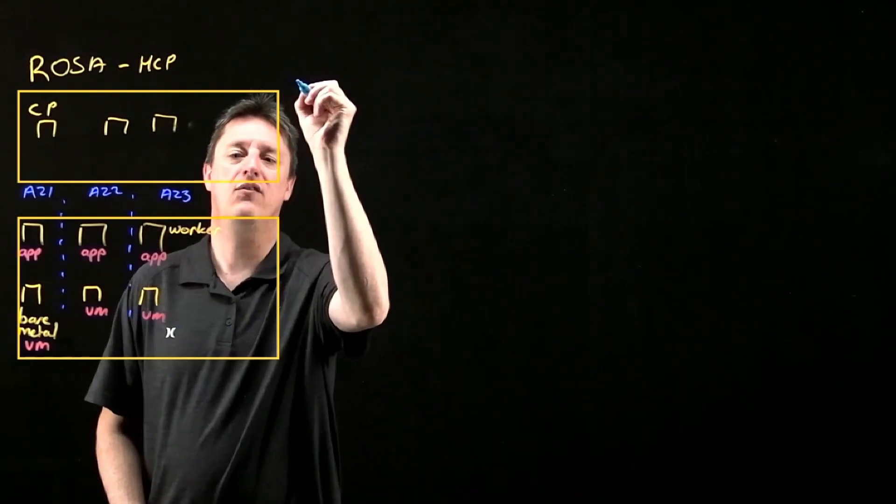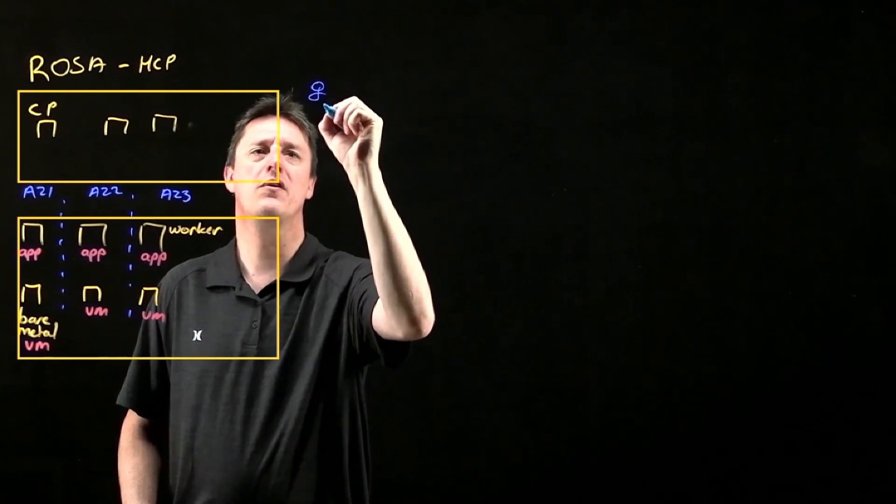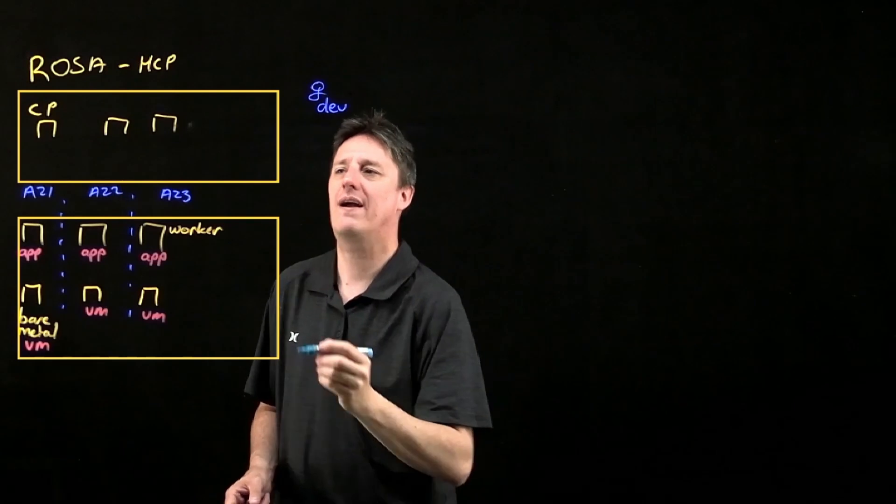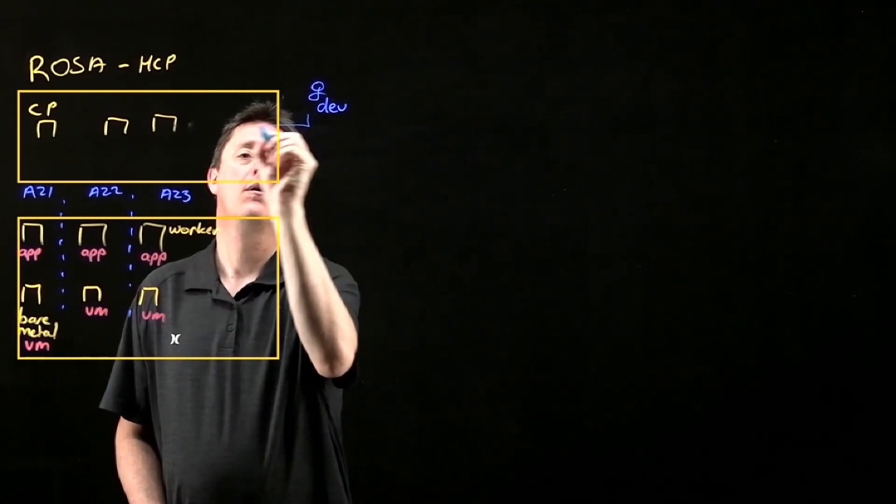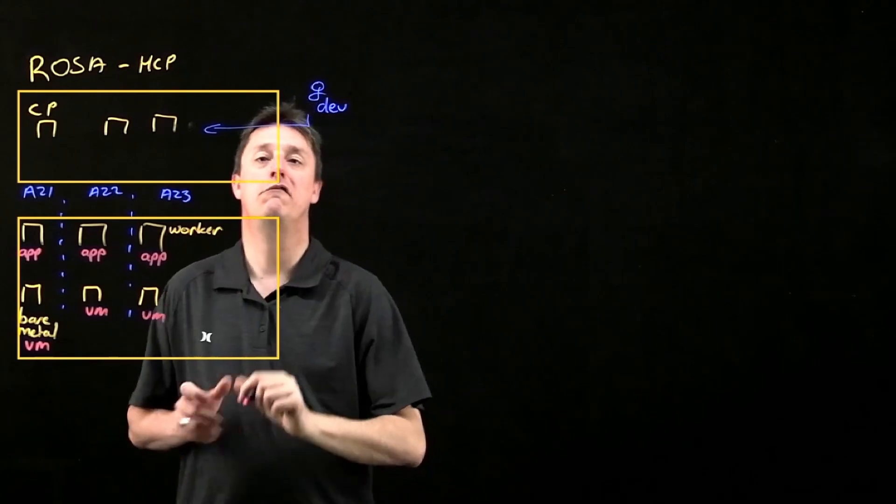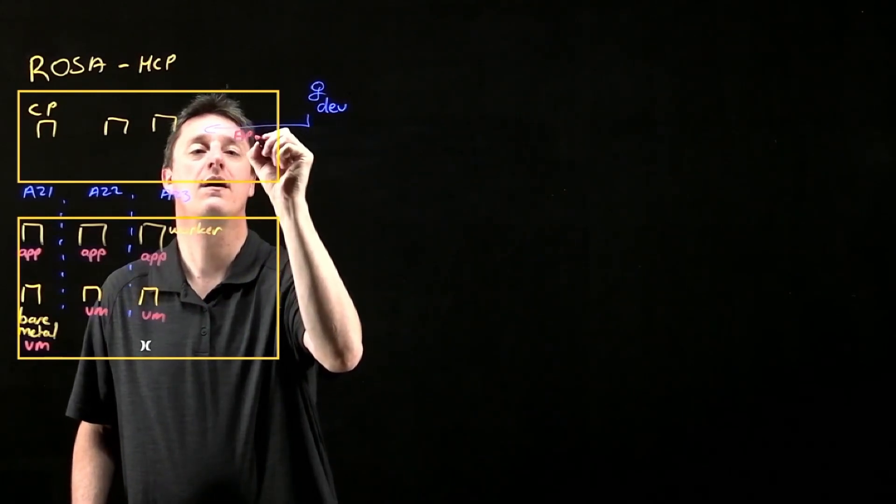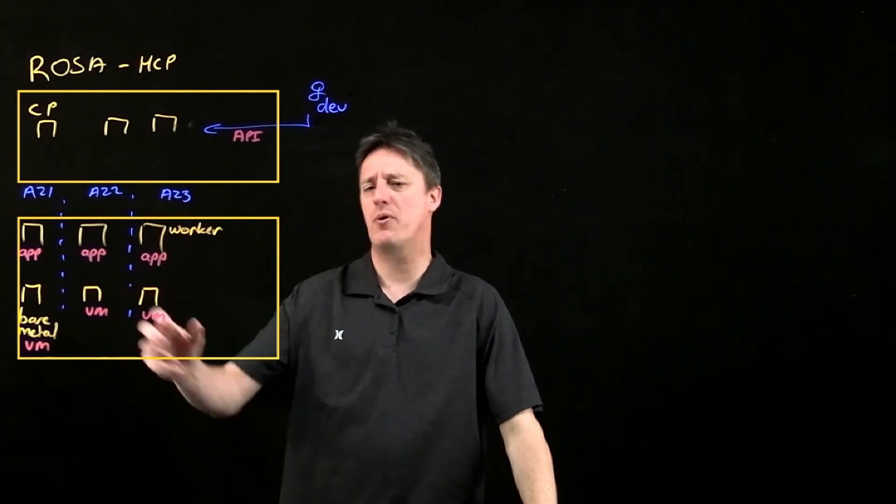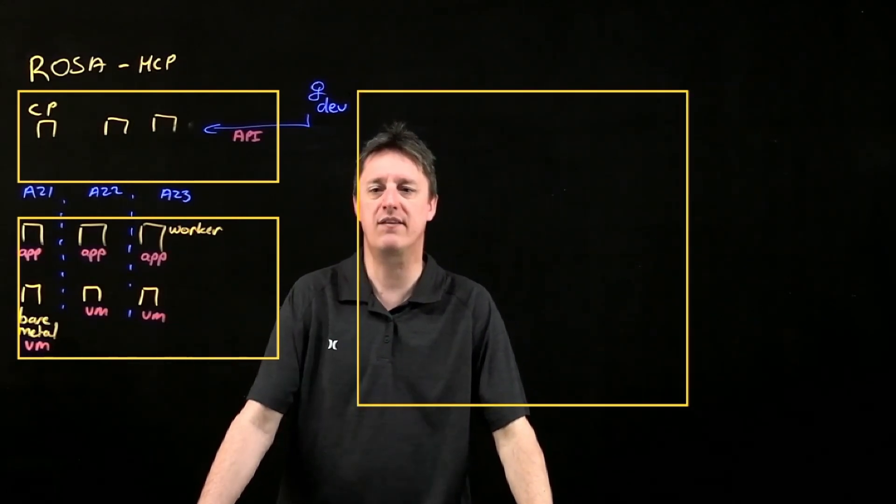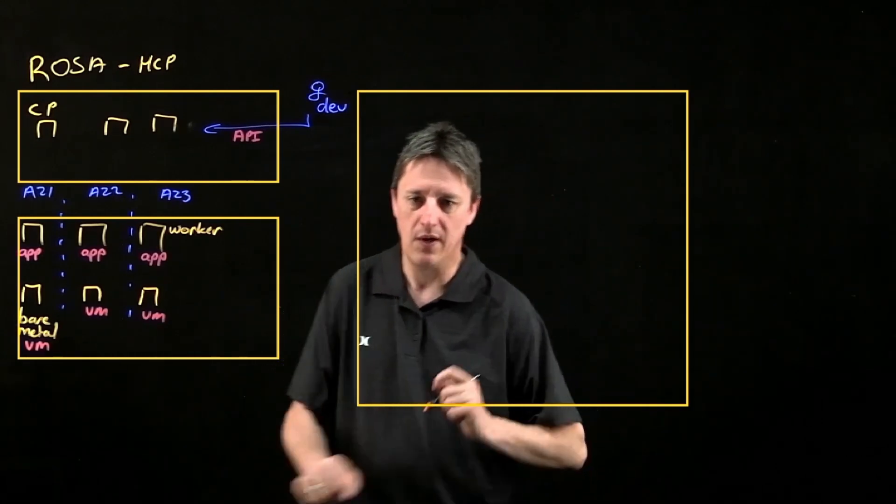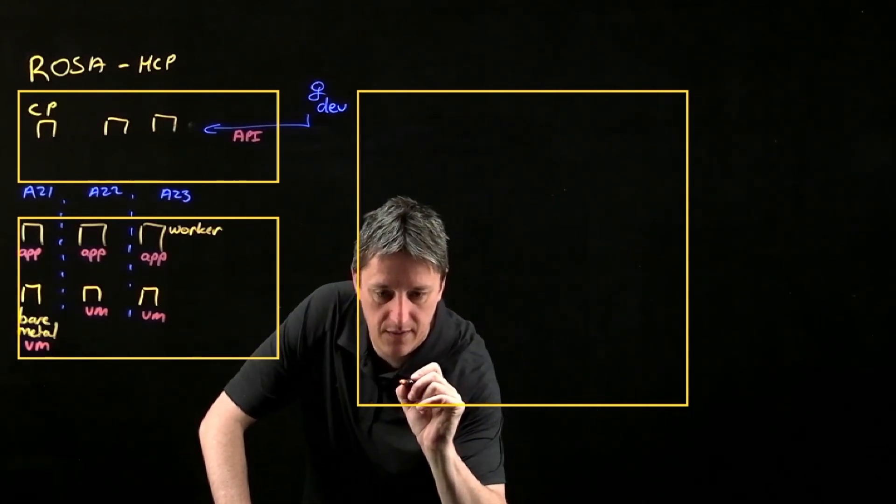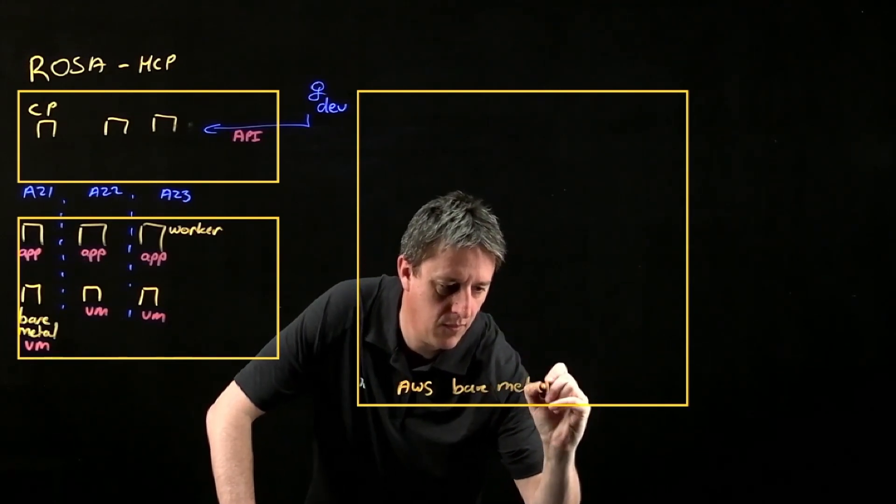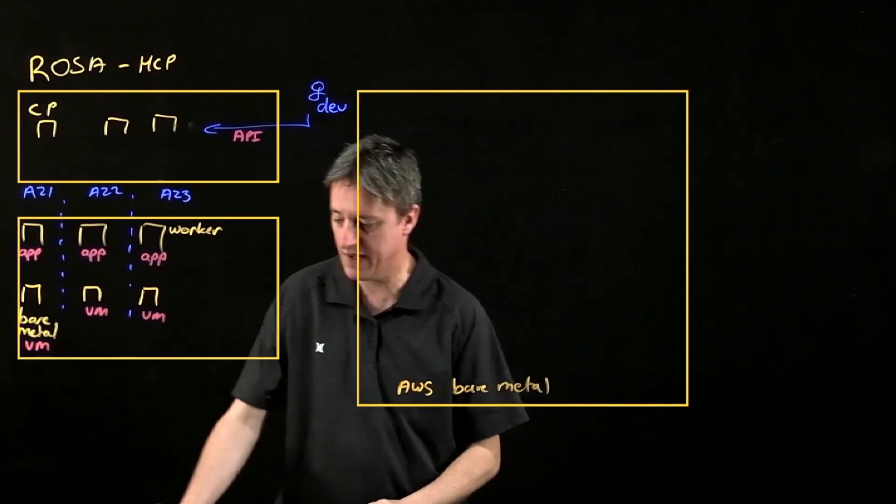What we typically have is we would have a persona, this might be a developer, this might be an admin, and they're going to be interacting with this OpenShift cluster via the OpenShift API. The API in turn talks to the operator modules of OpenShift virtualization. Let's zoom in on this bare metal instance. This is a AWS bare metal instance.